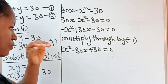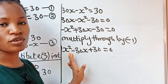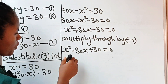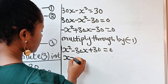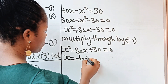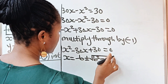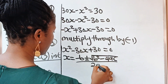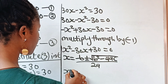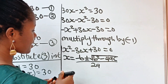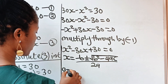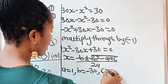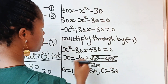Now let us use the quadratic equation formula to solve for x. Remember that x equals minus b plus or minus the square root of b squared minus 4ac, everything divided by 2a. Our a is the coefficient of x squared, which is 1. Our b is the coefficient of x, which is minus 30, and our c is the constant, which is 30.